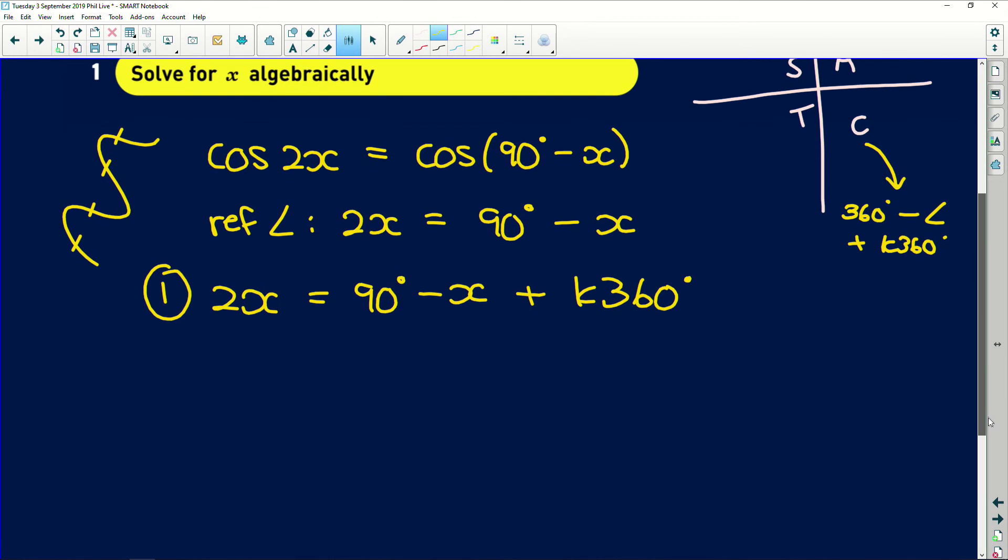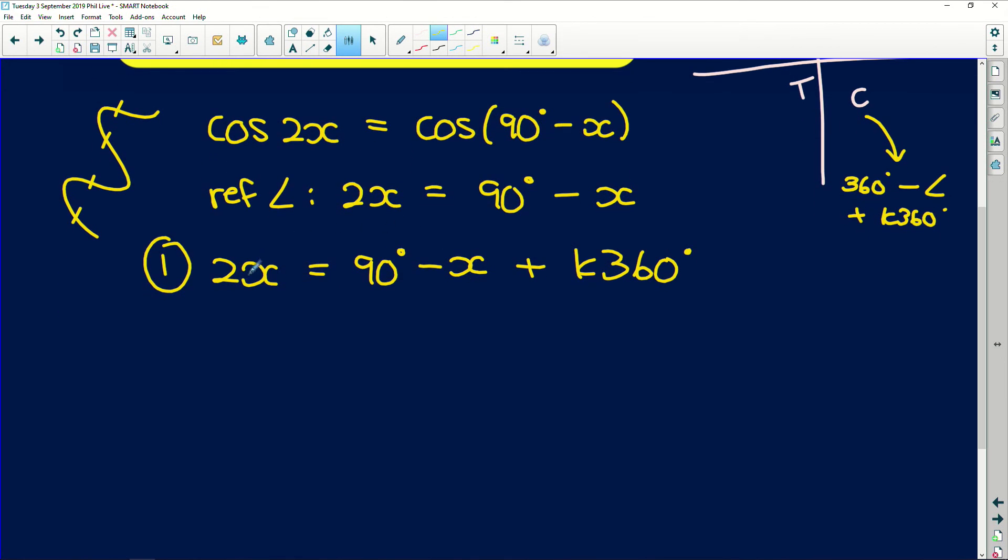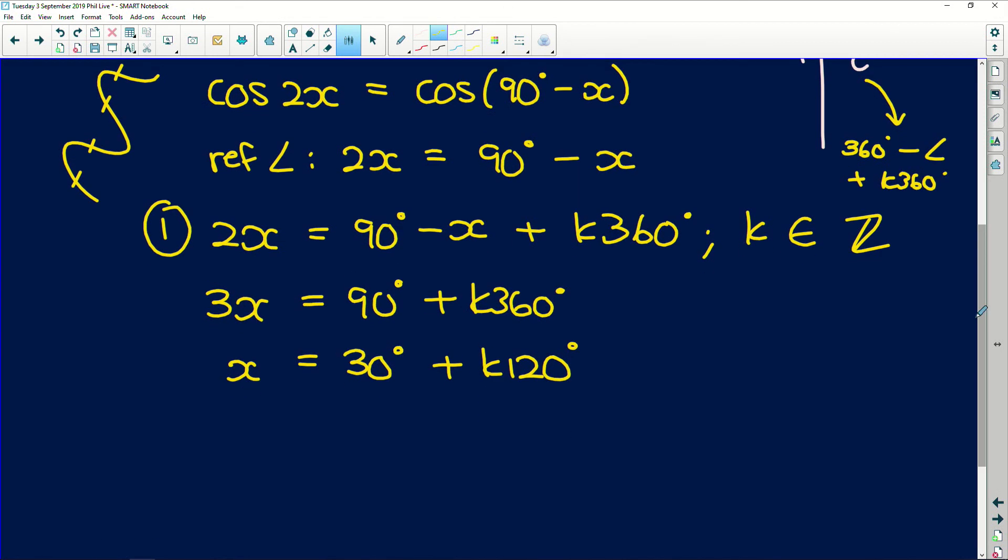So now we need to solve for x. So if we add x to both sides we get 3x is equal to 90 degrees plus k360. Don't forget very important. k is an element of the integers. Very important. You will get a mark for that. So now here if we want to solve for x we have to divide the entire expression by 3. So x is equal to 30 degrees plus k120. Very important. The period is going to change. So that is our first solution. We are not done though.